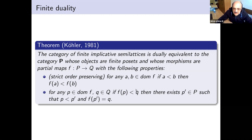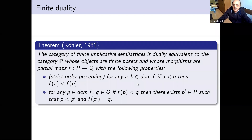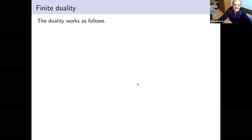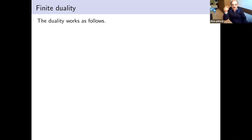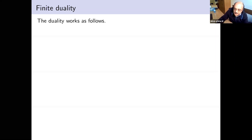In addition, for this strict order you also have the usual p-morphism condition: if p is in the domain of f and c is some point above it, then there exists p' such that p' ≥ p and f(p') = c. This is the standard result by Köhler. For the purposes of this talk I will give only the description of the functor that matters.